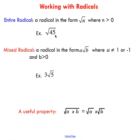And that's what we're going to do in this video lesson — learn how to simplify entire radicals and make them into mixed radicals. This useful property here, if you're taking notes, I would write this one down. What it says is the square root of some number times another number is equal to the square root of the first number times the square root of the second number. We're going to use that throughout this video.